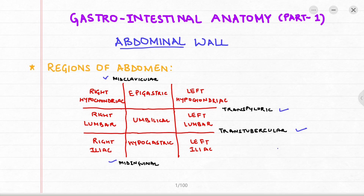This also gives rise to 4 different quadrants for ease of study: the right upper quadrant, the left upper quadrant, the right lower quadrant, and the left lower quadrant.